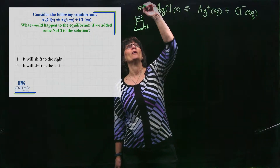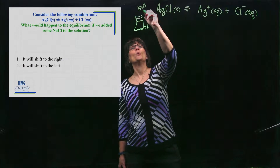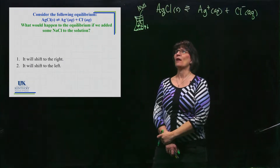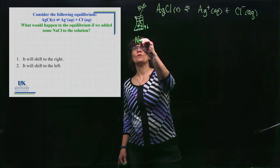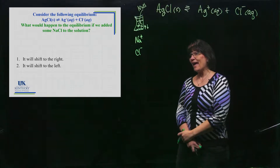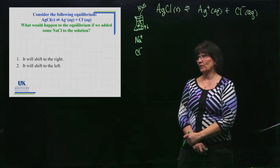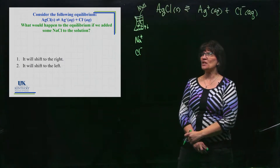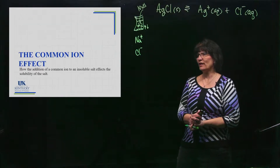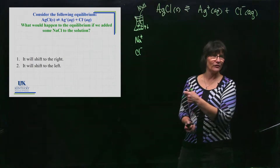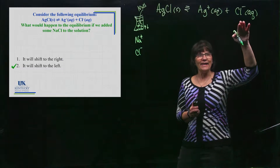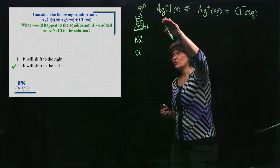Then we're going to come along and dump some sodium chloride in there. Sodium chloride is a soluble salt — we're going to dump it in and it's going to dissolve readily into this solution, giving us some sodium ions and some chloride ions. When you add that, we think about Le Chatelier's principle — which way will this equilibrium shift? Hopefully you say it's going to shift to the left.